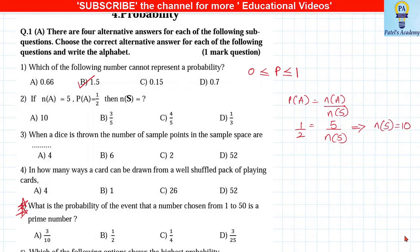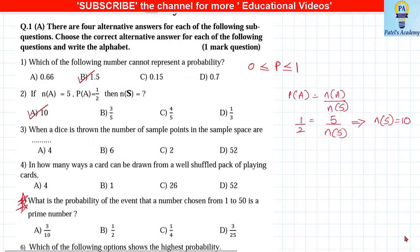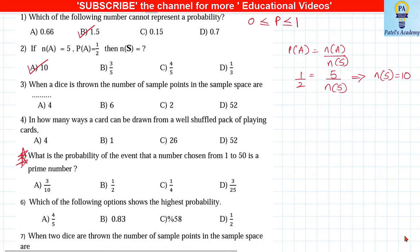When a die is thrown, there are total 6 outcomes.